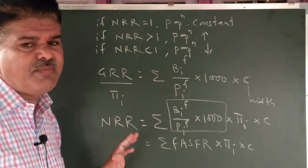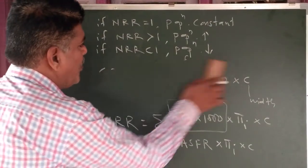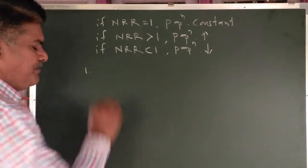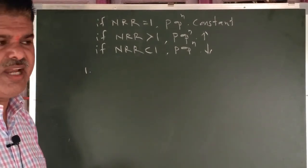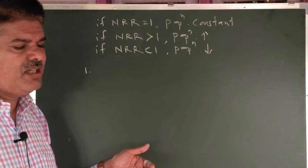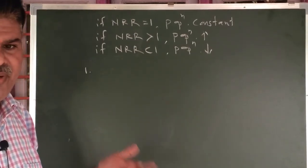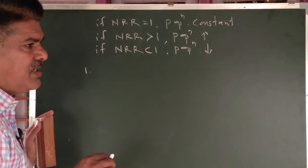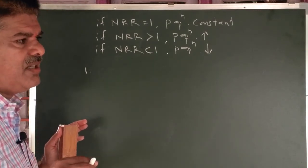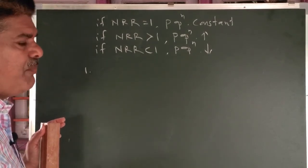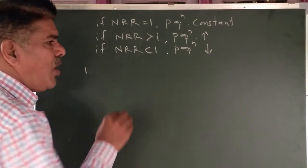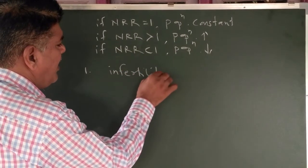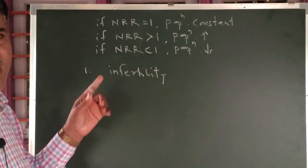But there are some limitations of NRR as well. In NRR, we are assuming that all girl children are going to give birth. But that is not the case. For instance, a girl may marry but still not be able to give birth, so infertility is a major cause of limitation for NRR.